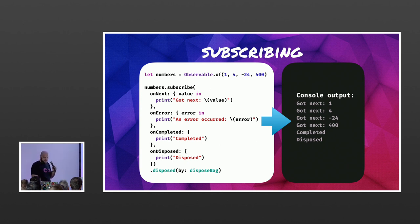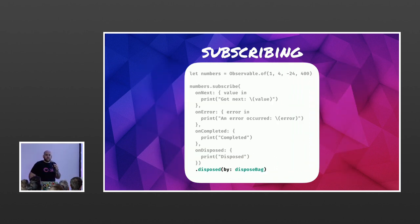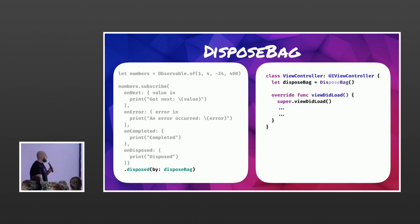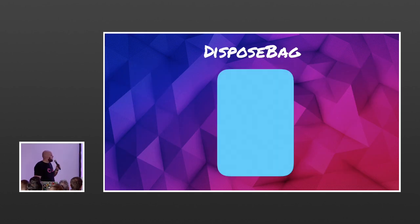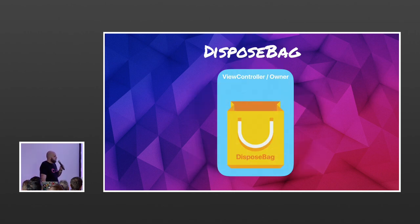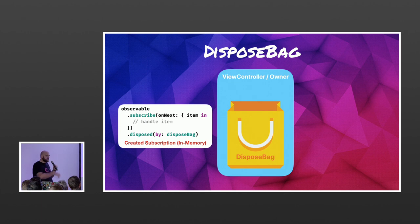The disposeBag is an object you tie to an owner of subscriptions. It connects your memory footprint to its owner. If I have a view controller that subscribes to things, I can put the subscriptions in the bag, and all the resources related to that view controller are inside that bag. Every time I subscribe, there is an in-memory subscription happening, and I put all of those subscriptions inside the bag owned by the view controller.